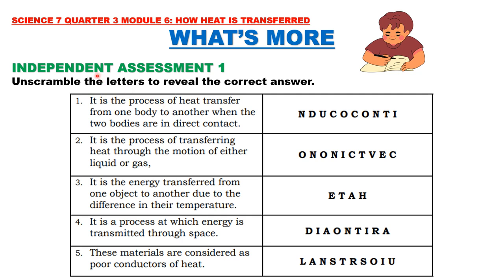Independent Assessment 1. Unscramble the letters to reveal the correct answer. 1. It is the process of heat transfer from one body to another when the two bodies are in direct contact. 2. It is the process of transferring heat through the motion of either liquid or gas. 3. It is the energy transferred from one object to another due to the difference in their temperature. 4. It is the process at which energy is transmitted through space. And 5. These materials are considered as poor conductors of heat.